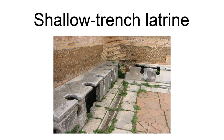The shallow trench latrine is similar to the slit trench latrine but is wider, 200 to 300 millimeters wide, and also shallow, with a depth of about 150 millimeters. This type is often used in the initial phases of emergencies and is a simple improvement on open defecation fields. A rule of thumb in emergency sanitation provision is to allow 0.25 square meters of land per person per day, meaning 2,500 square meters per 10,000 people per day, or nearly 2 hectares per week.